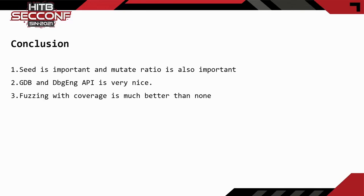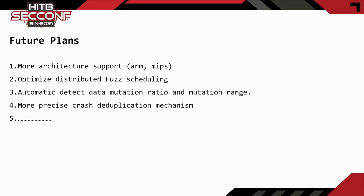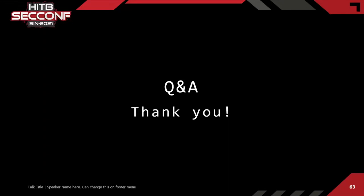To summarize: seed quality is important and mutation ratio is also important. GDB and the Debug Engine API are very useful. Fuzzing with breakpoint-based coverage is much better than black-box fuzzing. Future plans include: supporting more architectures such as ARM and MIPS; optimizing distributed fuzzing scheduling; automatically detecting optimal data mutation ratio and mutation range; and implementing a more precise crash deduplication mechanism. Thank you everyone. The above is all my speech.